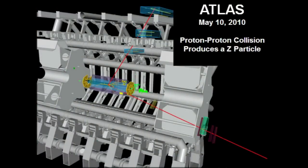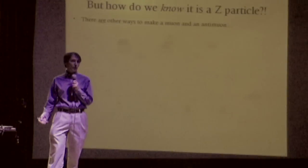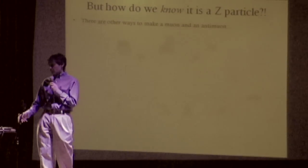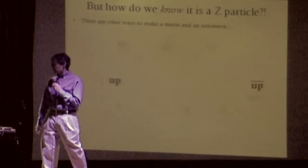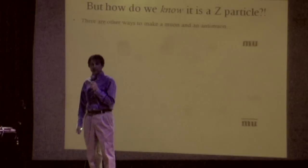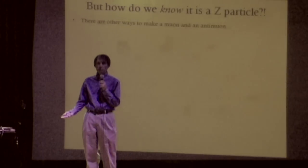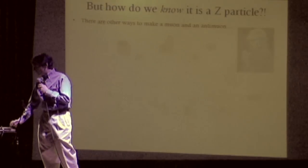Now, wait, you might say. I see a muon. I see an anti-muon. How do you know that's a Z particle? And that's a good question, because, in fact, there are other ways to make a muon and an anti-muon at the same time. You can just kind of make them directly out of an upquark and anti-upquark without ever seeing a Z particle. So how do we know it's a Z particle? Well, this is a bit of a detective story.